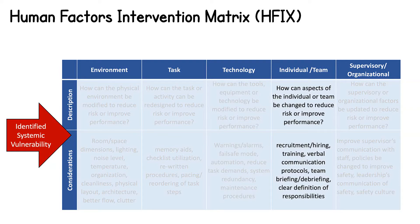Individual and team factors focus on characteristics of the individuals and teams performing work-related activities. Fixes could involve changes to the current recruitment or hiring structure to ensure that only certain types of individuals are hired for a particular position, introducing training or communication protocols, involving pre-briefing or debriefing to ensure that information is communicated effectively, and clearly defining the roles and responsibilities of team members.